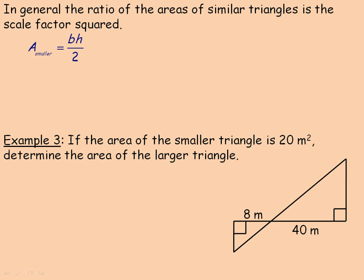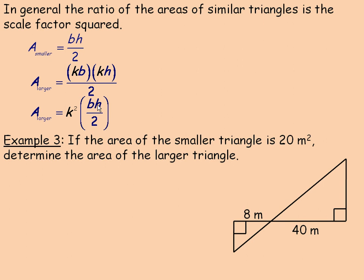In general, the ratio of the areas of similar triangles is the scale factor squared. To show this generally: the area of a triangle is base times height divided by 2. If we substitute k times B for the base and k times H for the height — since k is the scale factor — we get k squared times BH over 2. Notice that BH over 2 is the original area, so the area of the larger triangle equals k squared times the original area. This confirms that the larger triangle is k squared times bigger.